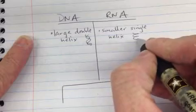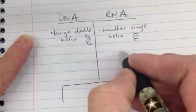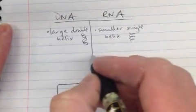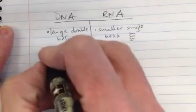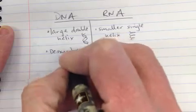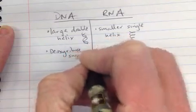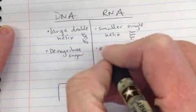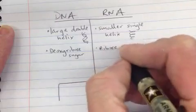Another difference between DNA and RNA is that DNA uses deoxyribose sugar, whereas RNA uses a ribose sugar.